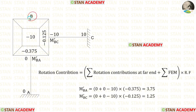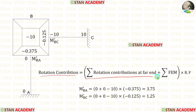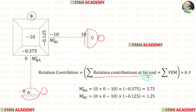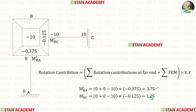In joint B, we have to find two rotation contributions: M dash BA and M dash BC. The formula to find the rotation contribution is: summation of rotation contributions at far end plus summation of fixed end moments, multiplied by the rotation factor. For joint B, the far ends are points A and C, which have fixed supports, so their rotation contributions are 0. The summation of fixed end moments is minus 10. After applying the rotation factors, we obtain M dash BA and M dash BC.